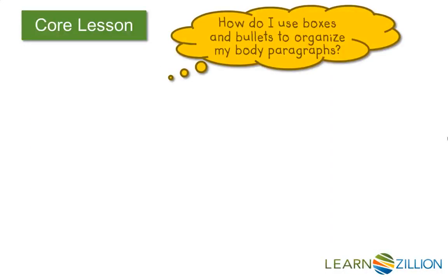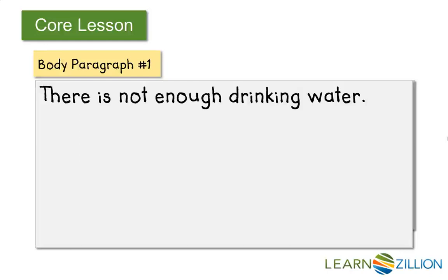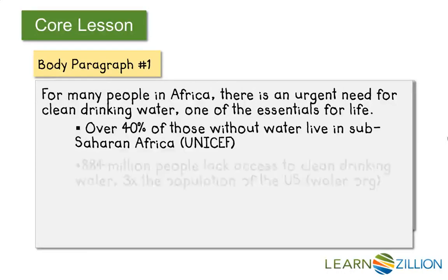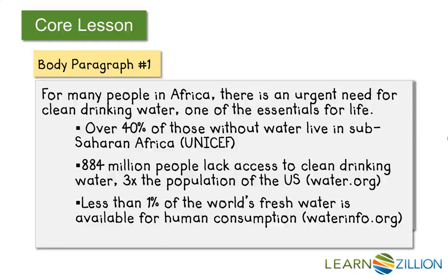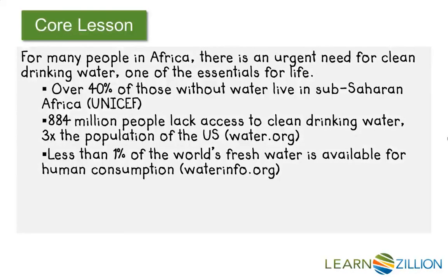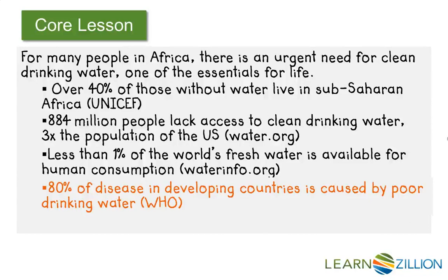So how do I use boxes and bullets to organize my body paragraphs? Body paragraph number one is reason number one. I take my claim and turn it into a topic sentence. Then I add my supporting evidence. I have my topic sentence along with evidence, but now I need to ask: do I have enough evidence to support this major reason for my argument? I'm going to say no, because I want more evidence to make my point even stronger — that there's an urgent need for clean drinking water in Africa. So I'm going to do some more research and add more facts.